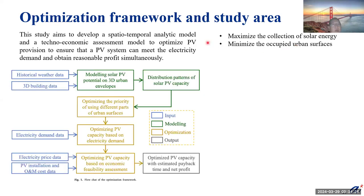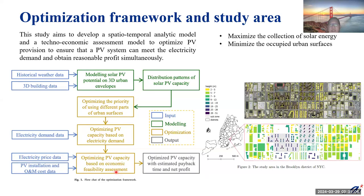This is the framework. We utilize historical weather data and solid building data, and based on the light field modeling I just presented, we estimate the solar distribution. Then we optimize the priority of using different parts of urban services, followed by optimization of PV capacity based on real electricity demand, then optimization of PV capacity based on economic feasibility assessment. In this study, we selected New York City, specifically focusing on a blue cleaning district, because in this area we can get the real electricity consumption data for each individual building.